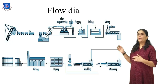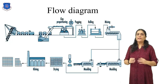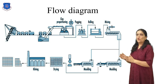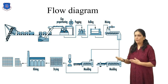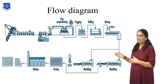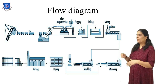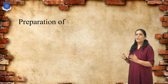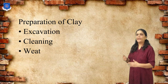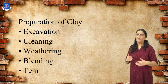Flow diagram of brick manufacturing process. In this process, operations involved are like preparation of clay, molding, drying and burning. First, preparation of clay involves operations like excavation, cleaning, weathering, blending, and tempering.